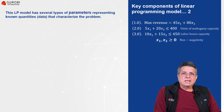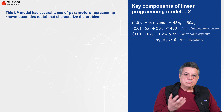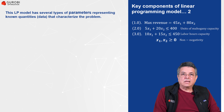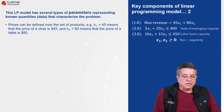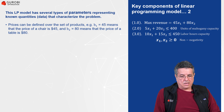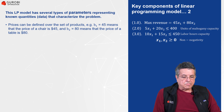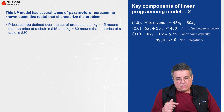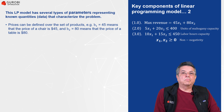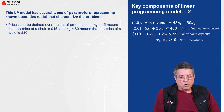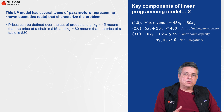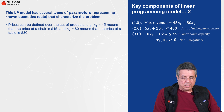The LP model has several types of parameters representing the known quantities or data that characterize the problem. For example, prices can be defined over the set of products. We can use the parameter B1 equal to 45, meaning the price of a chair is 45 dollars. If the price changes, B1 would be updated accordingly. The price of a table is named B2, which in this case equals 80 dollars.